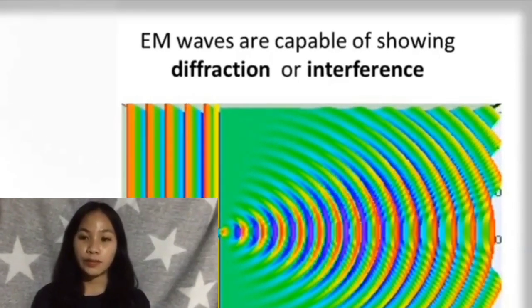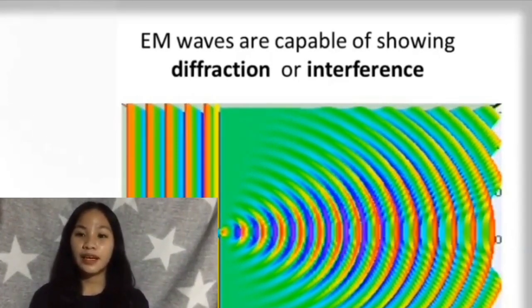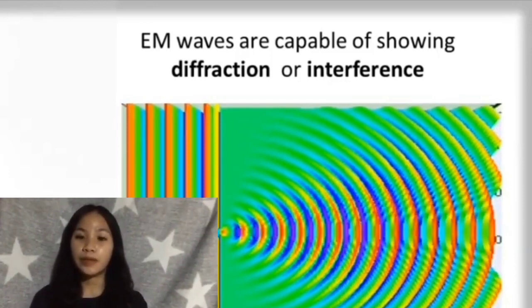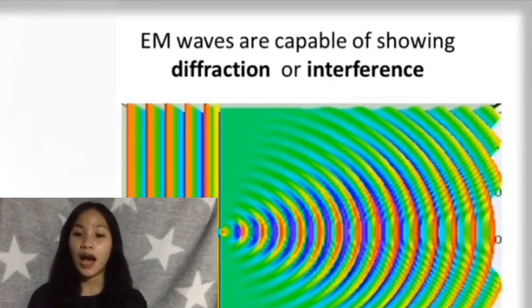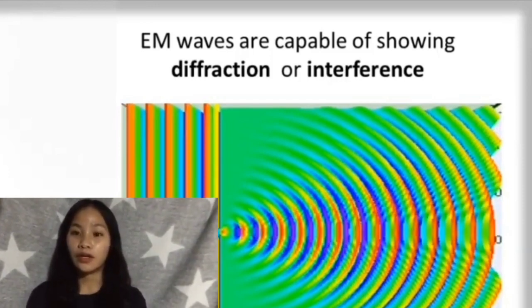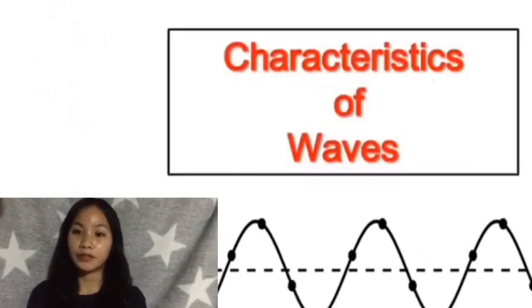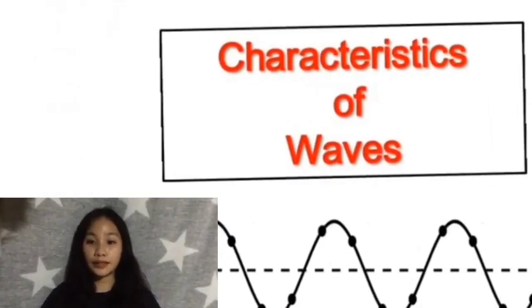Electromagnetic waves are not depleted by either the electric field or the magnetic field. However, they are capable of showing diffraction or interference.